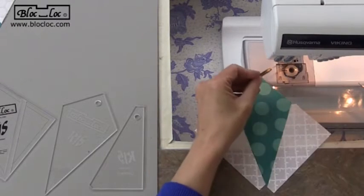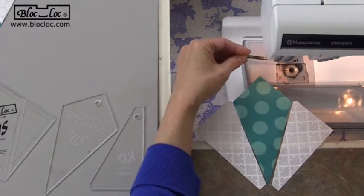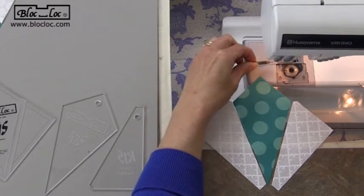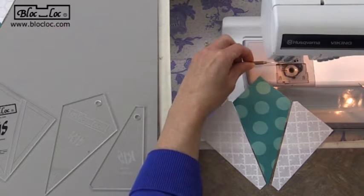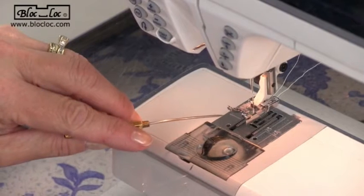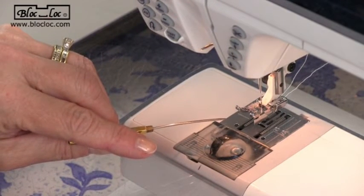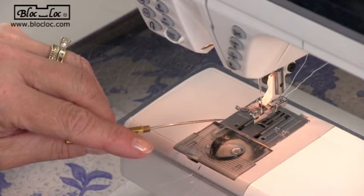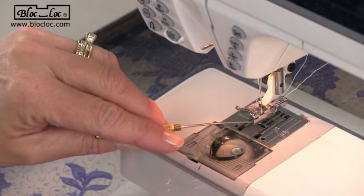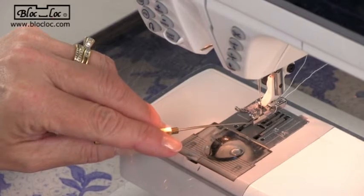I put a foot on my sewing machine and this is my favorite foot, you don't have to have it, use what works for you. But I can move my needle position over to 4.0 and to the right and with this flange on the end of my sewing machine foot, it gives me absolute accuracy. This is a perfect quarter inch.